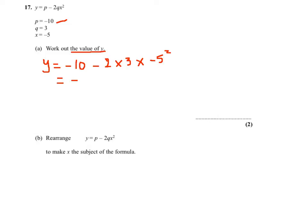This will give us minus 10, minus 2 times 3 is 6, times minus 5 squared is 25. So this will be equal to, 6 times 25 is 150, so minus 10 minus 150. So the answer is minus 160.